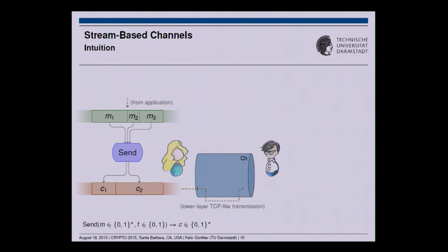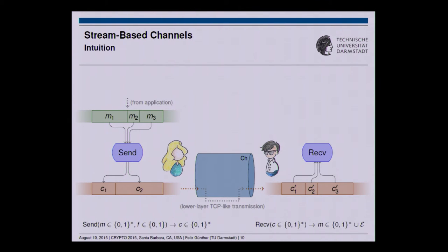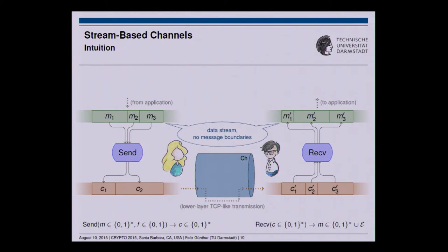The constructed ciphertext stream is transported to the receiver, where there is some lower-layer transmission protocol such as TCP. Due to fragmentation, Bob on the receiver side will potentially see a differently fragmented representation of the very same stream — as long as there is no modification. We ask that the receiving decryption algorithm is able to process this stream again in a fragmented way and reconstruct the message stream that was sent. Note that we do not require message boundaries to be preserved — the fragments seen on the receiver side will probably not coincide with the boundaries on the sender's calls.